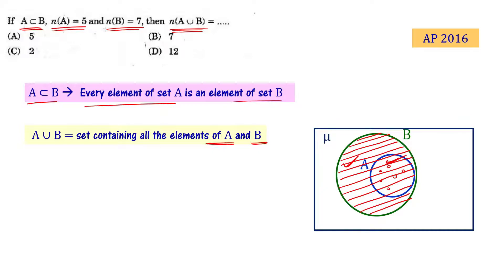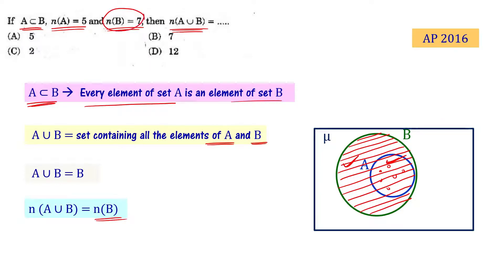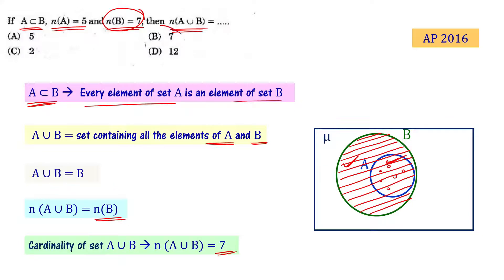Since A is a subset of B, A∪B equals B. Therefore, the number of elements of A∪B equals the number of elements of B. The number of elements of B is given as 7, so n(A∪B) equals 7. Choice B is the answer.